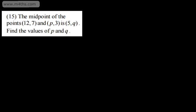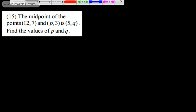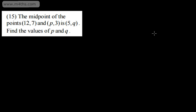Let's look at another question. We're told the midpoint of the points 12 comma 7 and P comma 3 is 5 comma Q. We need to find the values of P and Q. So what we've got here is a snow. And I'll just go ahead and draw this up. Now, it might not be wholly accurate, but it should give you some idea of what's happening. So if we put the line on, let's go ahead and put the line just here.